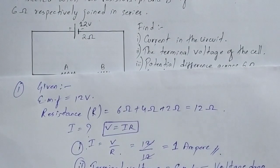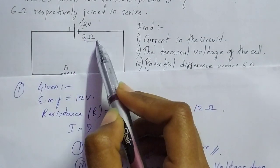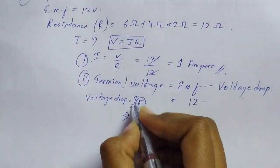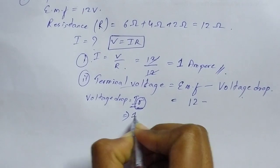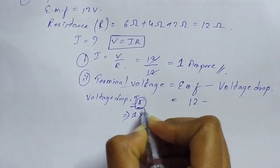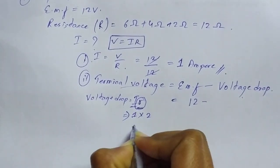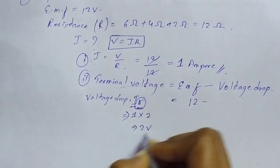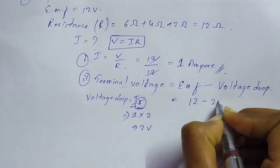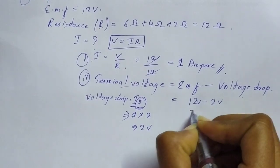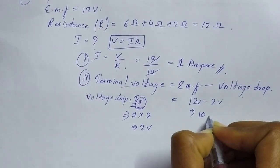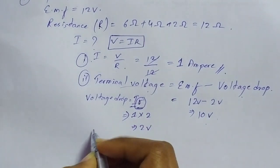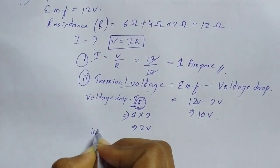The internal resistance of the circuit is 2 ohm, and current we already found is 1 ampere. So voltage drop = 1 × 2 = 2 volt. Terminal voltage = 12 volt minus 2 volt = 10 volt. The terminal voltage of the cell is 10 volt.